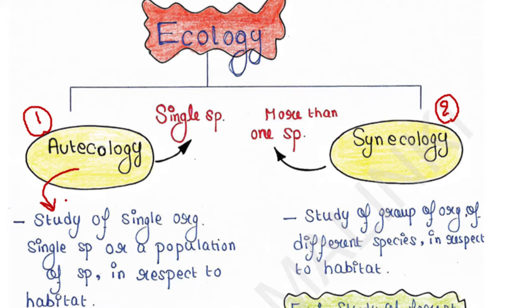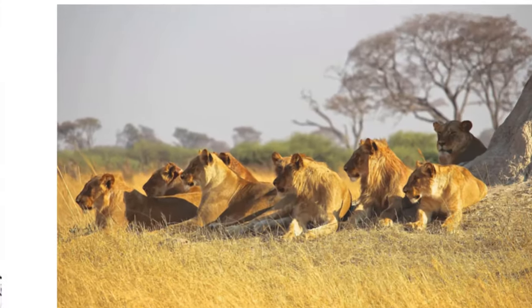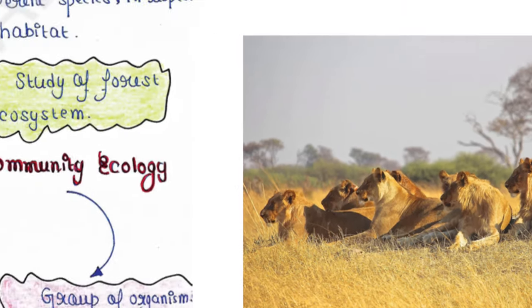Autecology is the study of a single organism, a single type of species, or a population of species in respect to their natural habitat. Example: study of lion population in respect to their natural habitat, such as land, nutrient and water availability, light, humidity, etc.